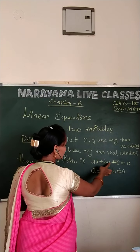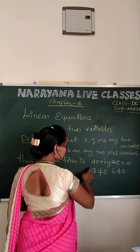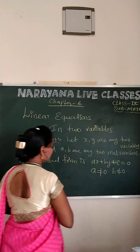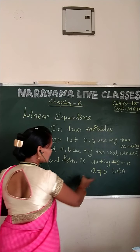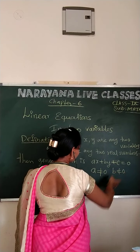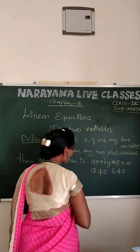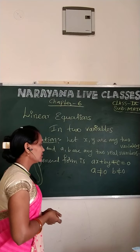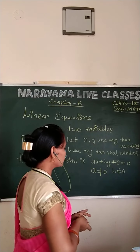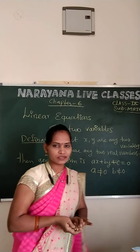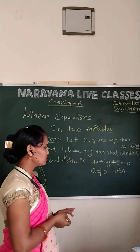Here X and Y are two variables, and A, B, C are real numbers. A is not equal to zero and B is also not equal to zero. Why are we taking this condition — A is not equal to zero, B is not equal to zero?